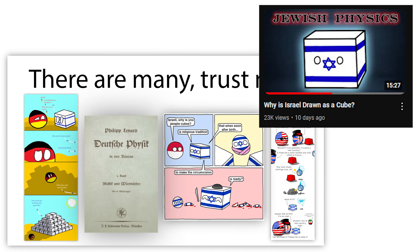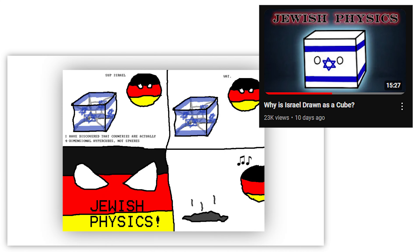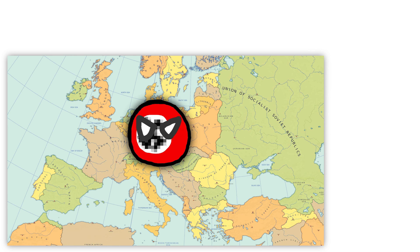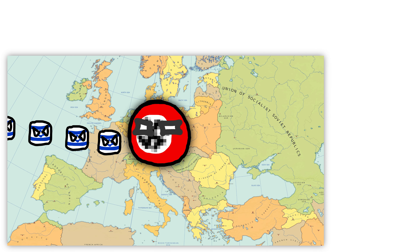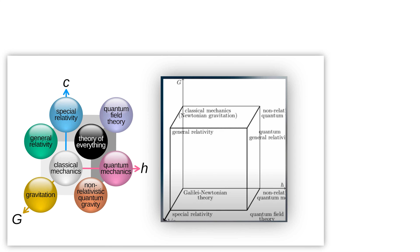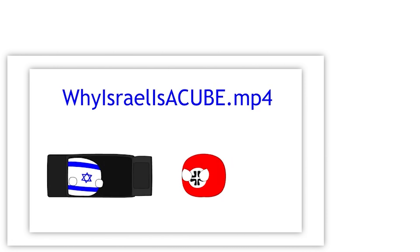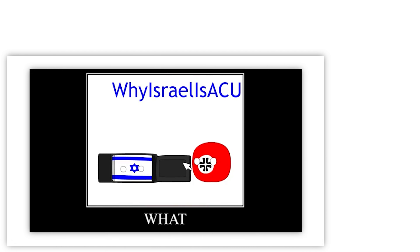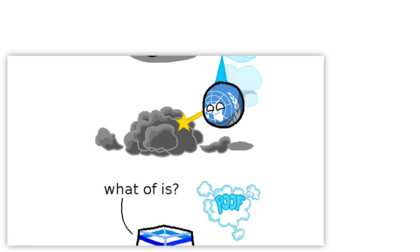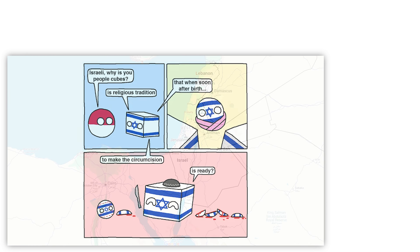In my last video I explain why Israel is drawn as a cube — in short it's a joke that comes from Nazi propaganda, but you have to watch the video to dive deeper. Another thing I said in that video is that if it got 500 likes I would make the video you're currently watching. Both of my last videos got over 1000 likes, which is amazing, and that's why I'm forced to make this video.